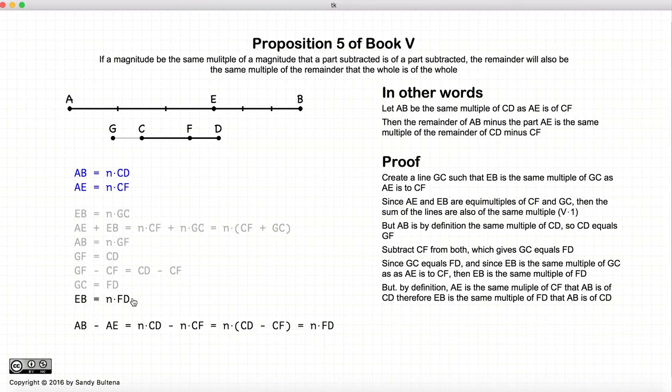But let's just rewrite this algebraically again. So AB minus AE, we subtract equal multiples of something and we end up with the same multiple of the remainder.